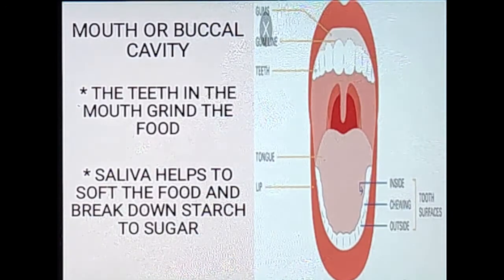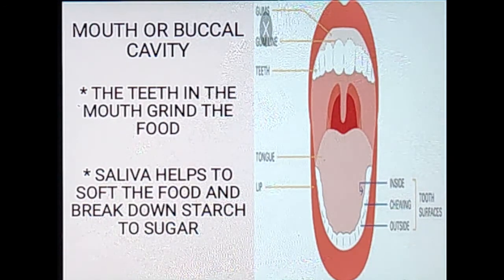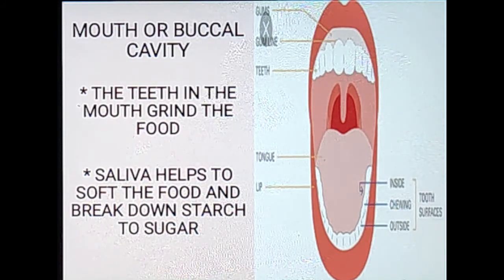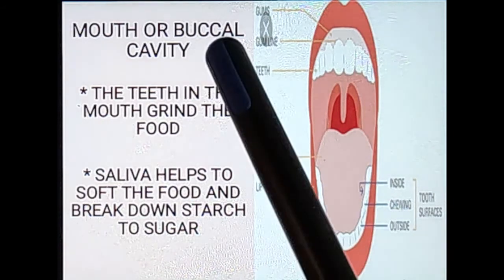Mouth is the first part of the digestive system. The teeth present in the mouth grind the food into smaller pieces. The saliva present in your mouth helps to make the food soft and also starts to break down starch to sugar. So while you take food, you take it in the form of starch, which is a complex form of sugar. The saliva makes the food softer and also breaks the food from starch to sugar, converting it into a simpler compound. Note that mouth is also known as buccal cavity.